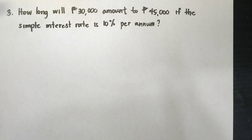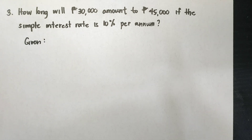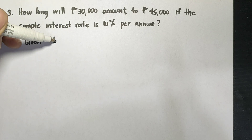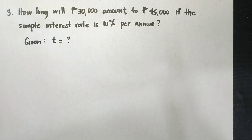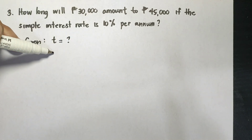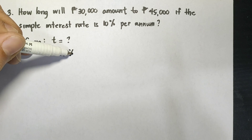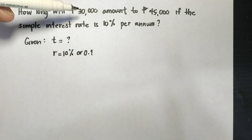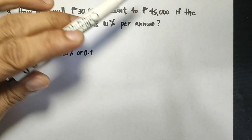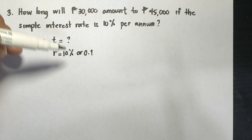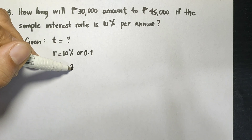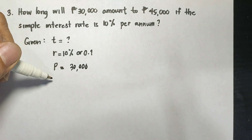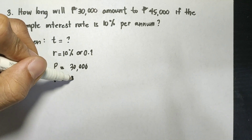Problem number 3: how long will 30,000 pesos amount to 45,000 pesos if the simple interest rate is 10% per annum? We are looking for time in years. The rate is 10% or 0.1 in decimal. The principal is 30,000 pesos and the future value F is 45,000 pesos.